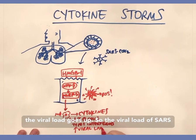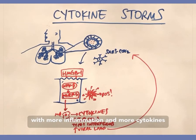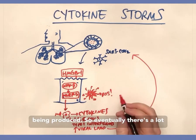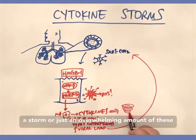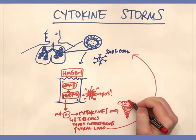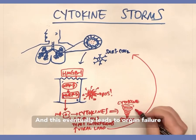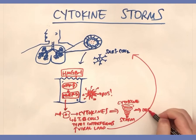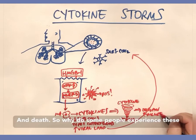As the type 1 interferon response decreases, the viral load of SARS-CoV-2 goes up, creating a cycle of more inflammation and more cytokines being produced. Eventually there is a large number of cytokines — a storm, or overwhelming flood — in the body, which eventually leads to organ failure and death.